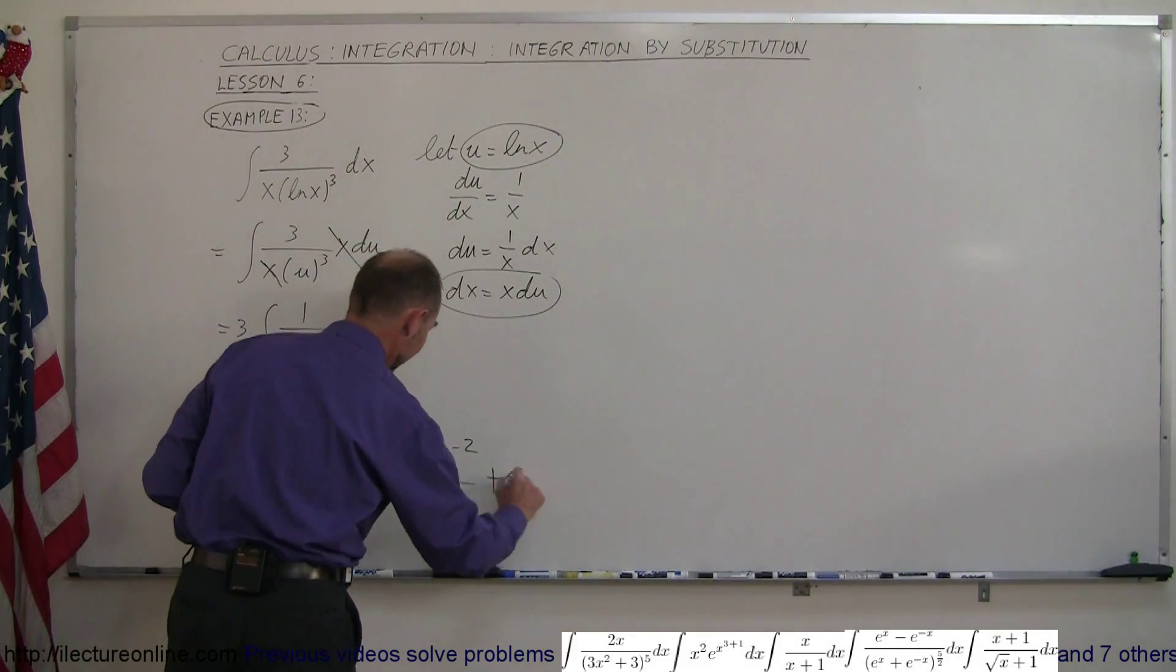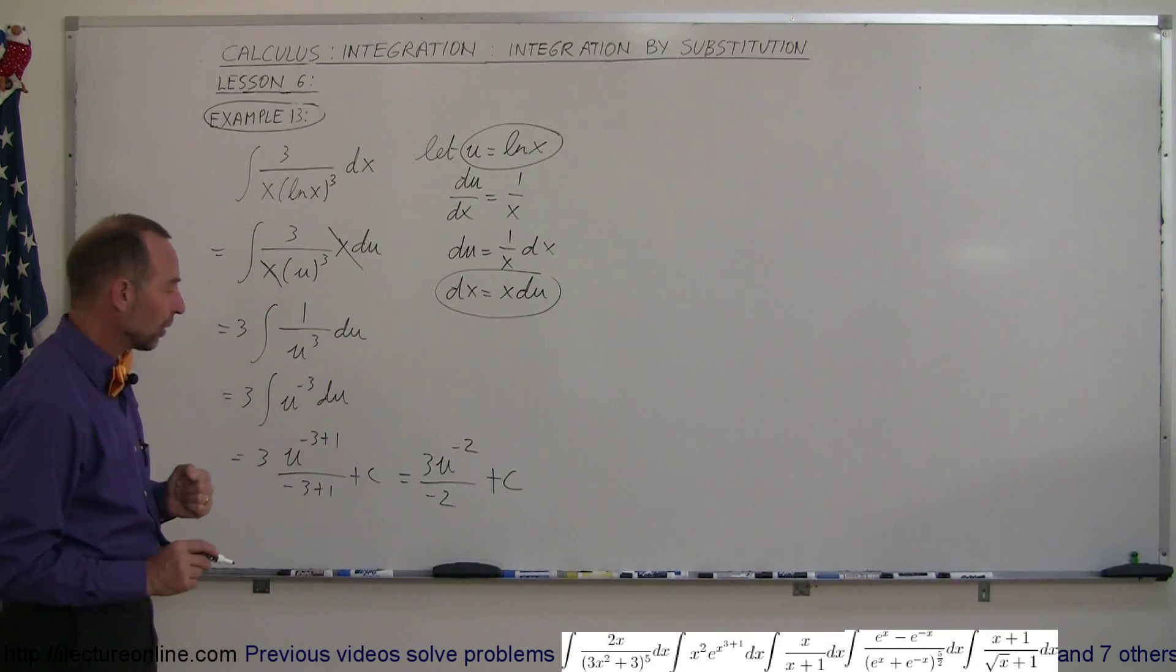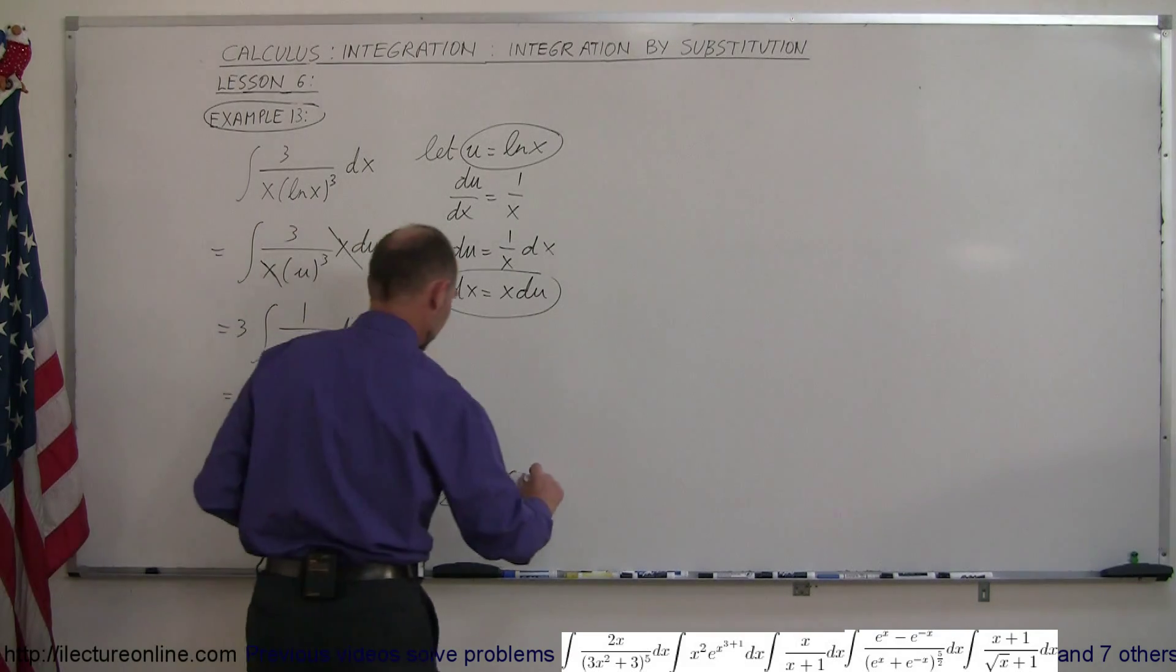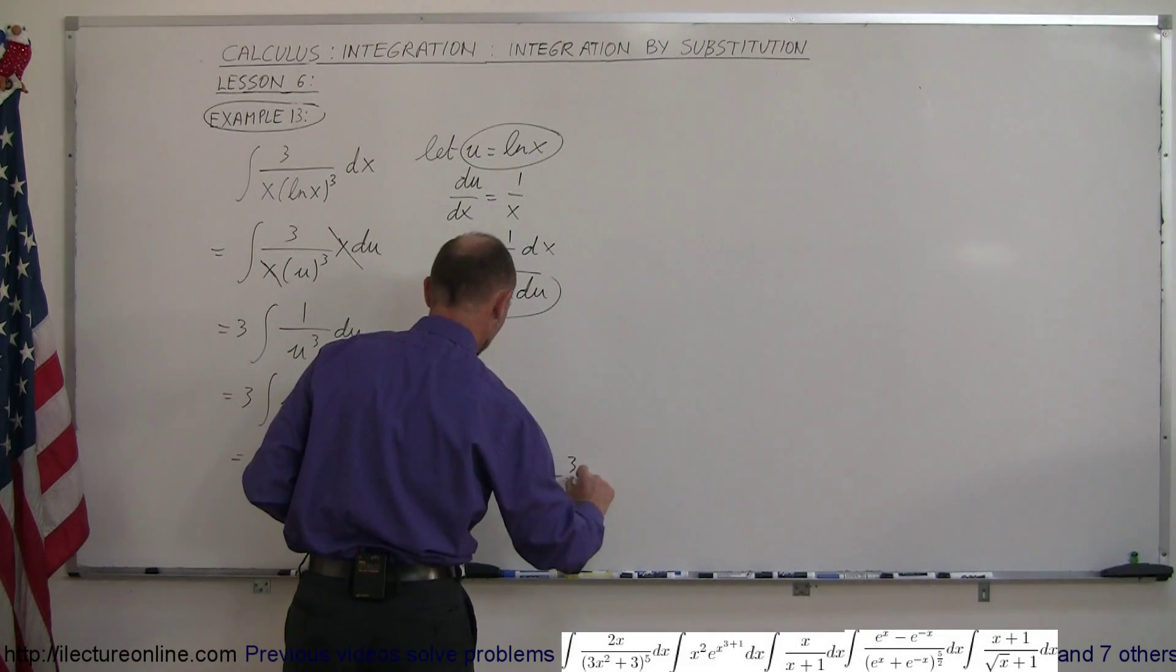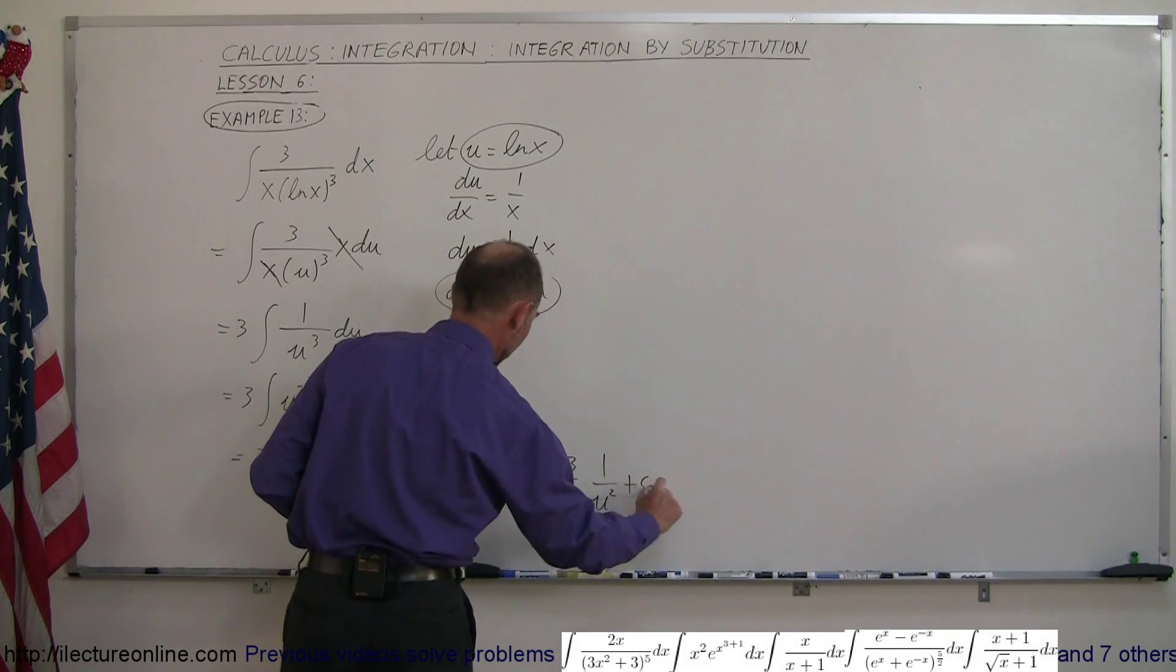And then I'm going to move the u to the minus 2 to the denominator to make that into a positive exponent. So this is equal to minus 3 over 2 times 1 over u squared plus c.